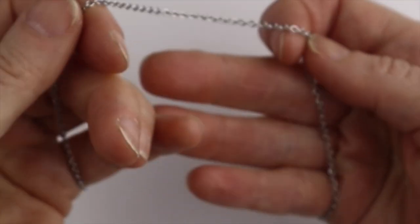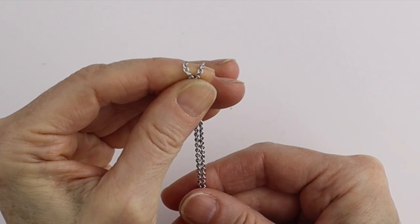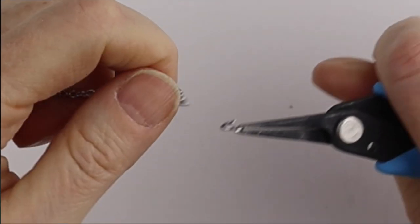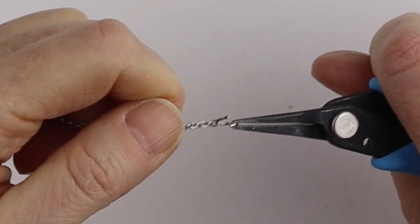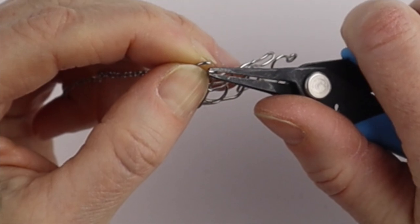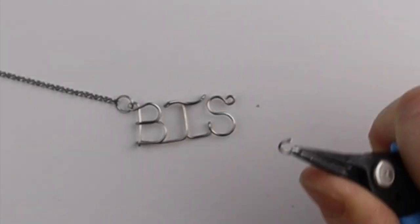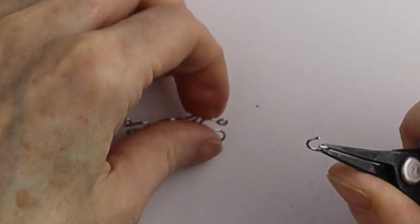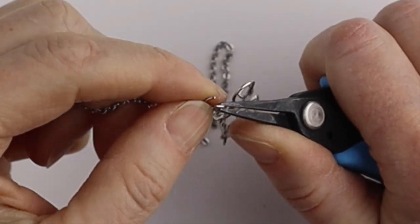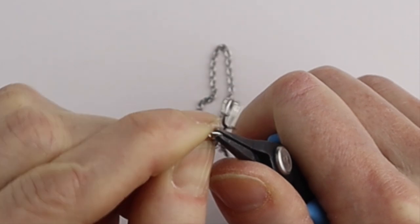So now we're going to take our chain, put those two ends together and we'll cut it at the halfway point. Open up a jump ring, stick it on one of the links and put it through the B. Close it up, take the other jump ring, put it through the S and through the other chain and close it up.